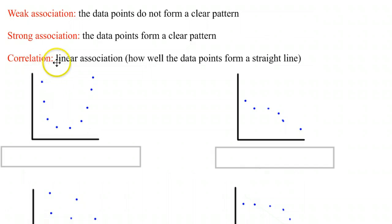Correlation means that you have a linear association or a linear pattern, whereas just saying that you have an association means that the data forms a pattern of some kind, some kind of mathematical pattern, whereas correlation focuses on the fact that it is in a straight line.